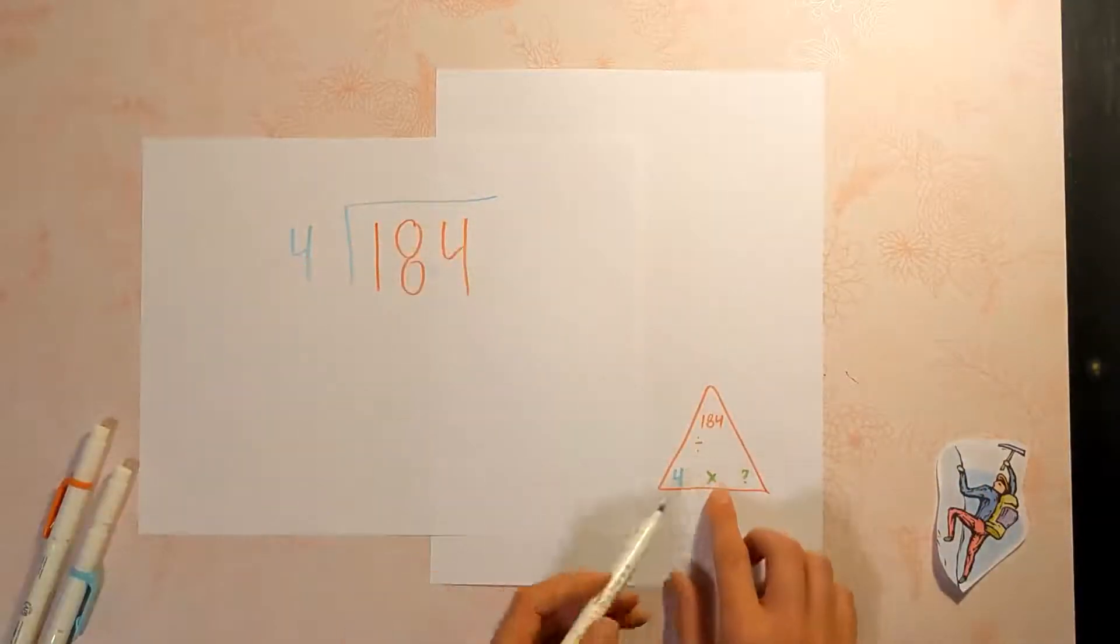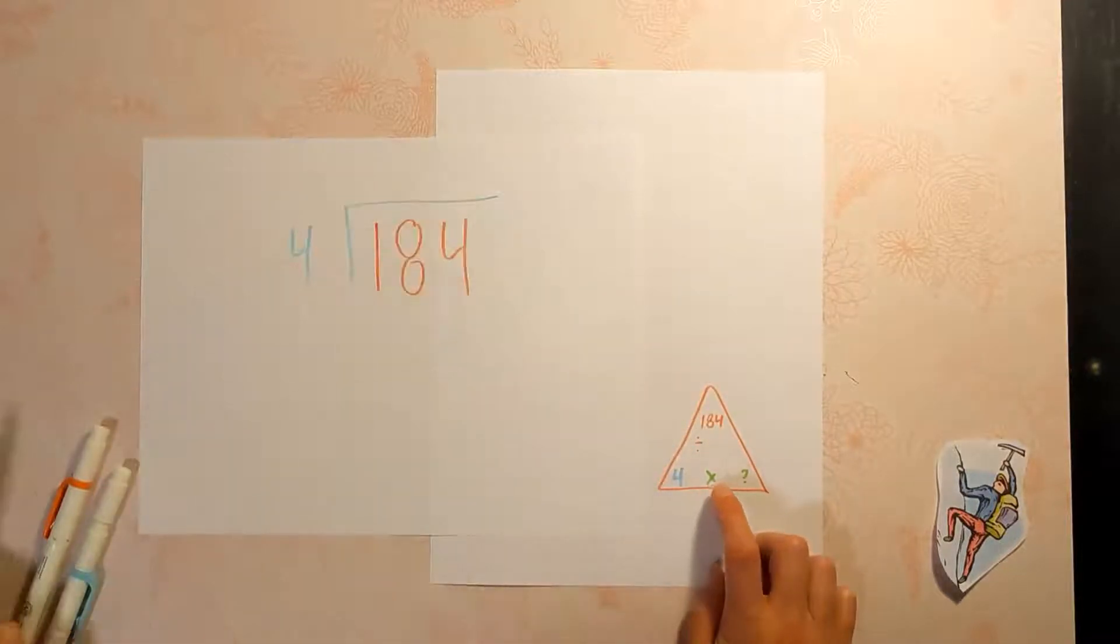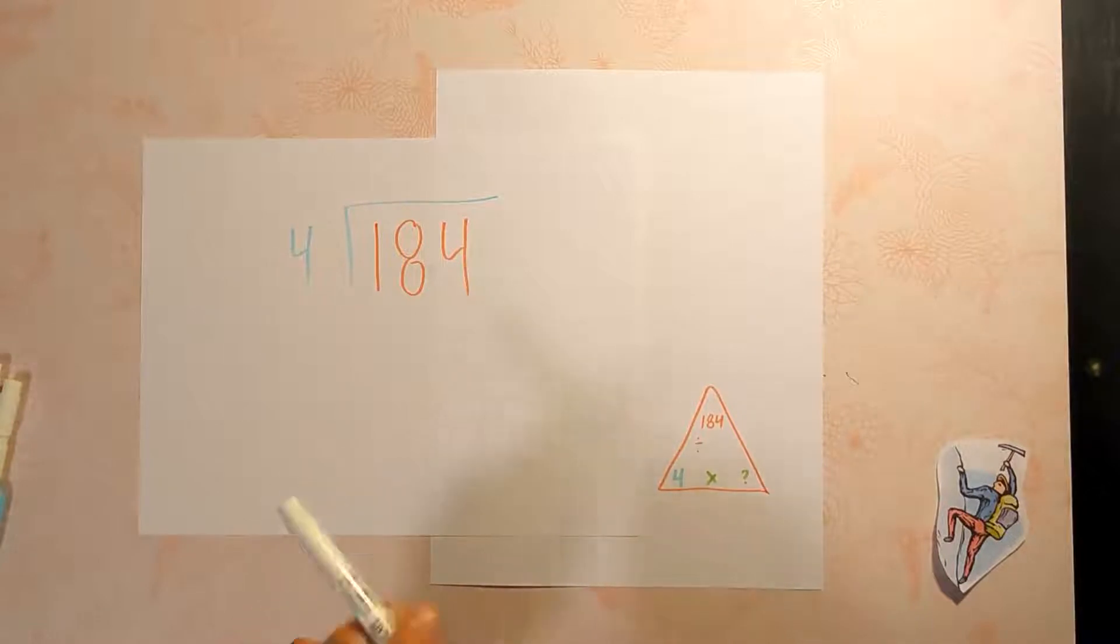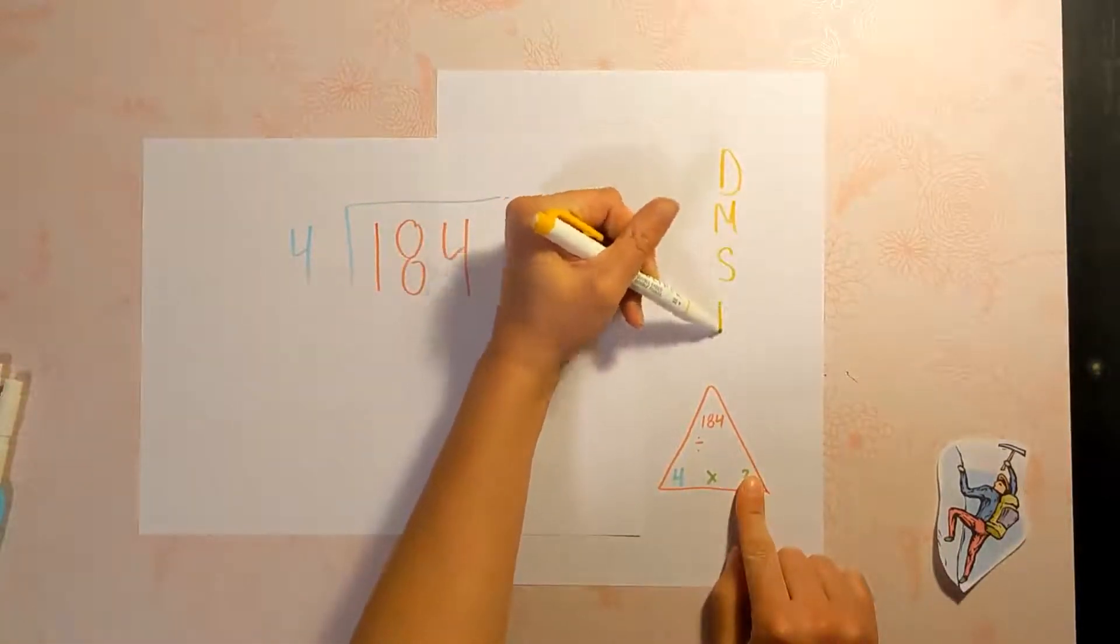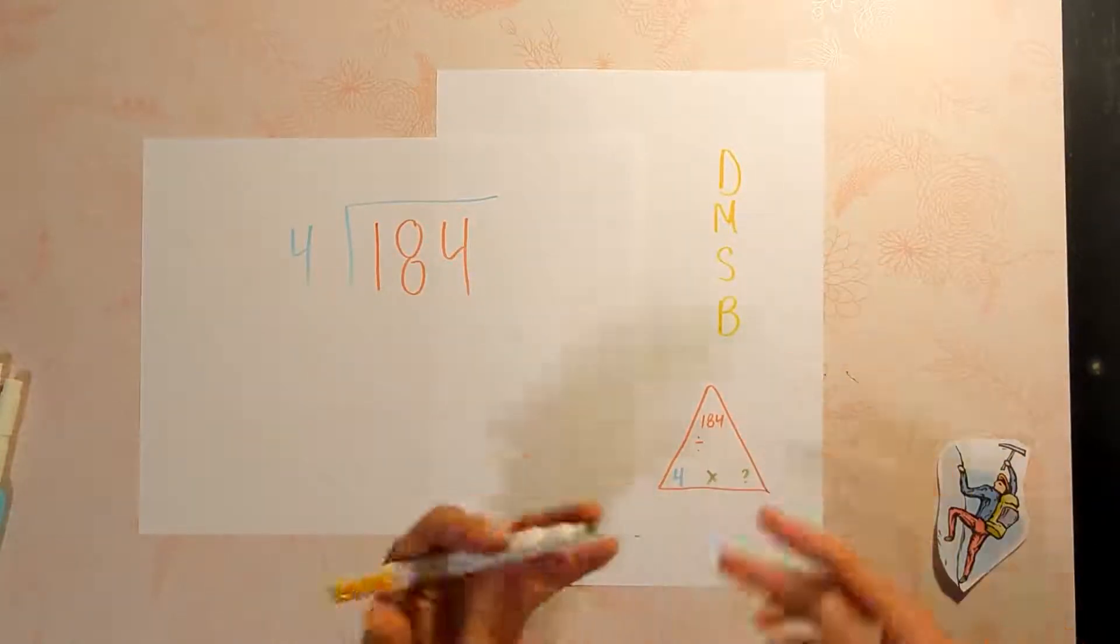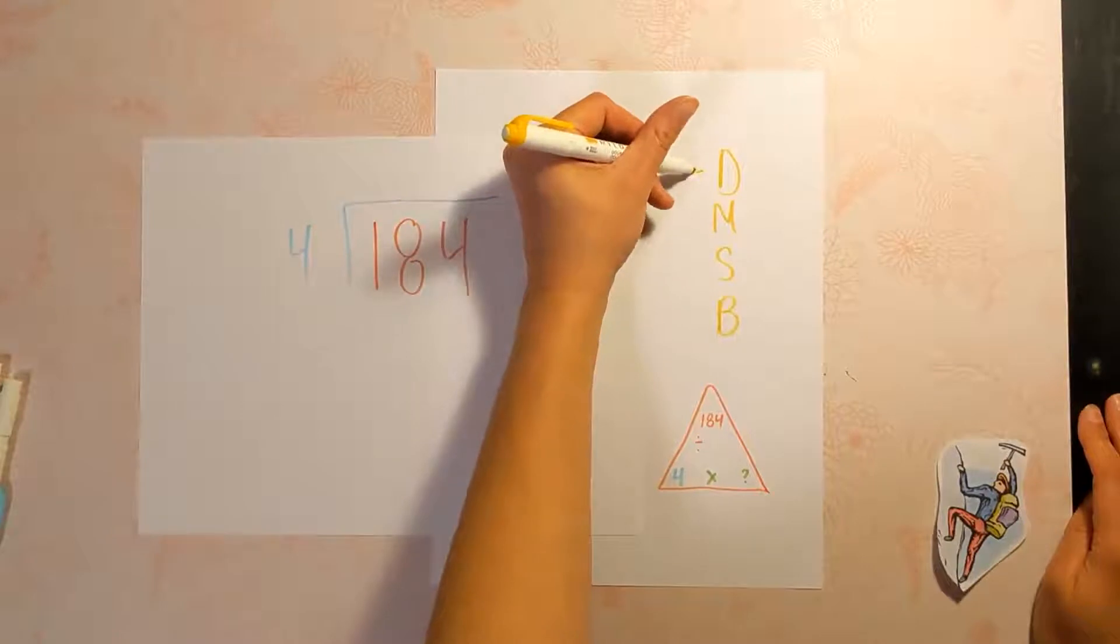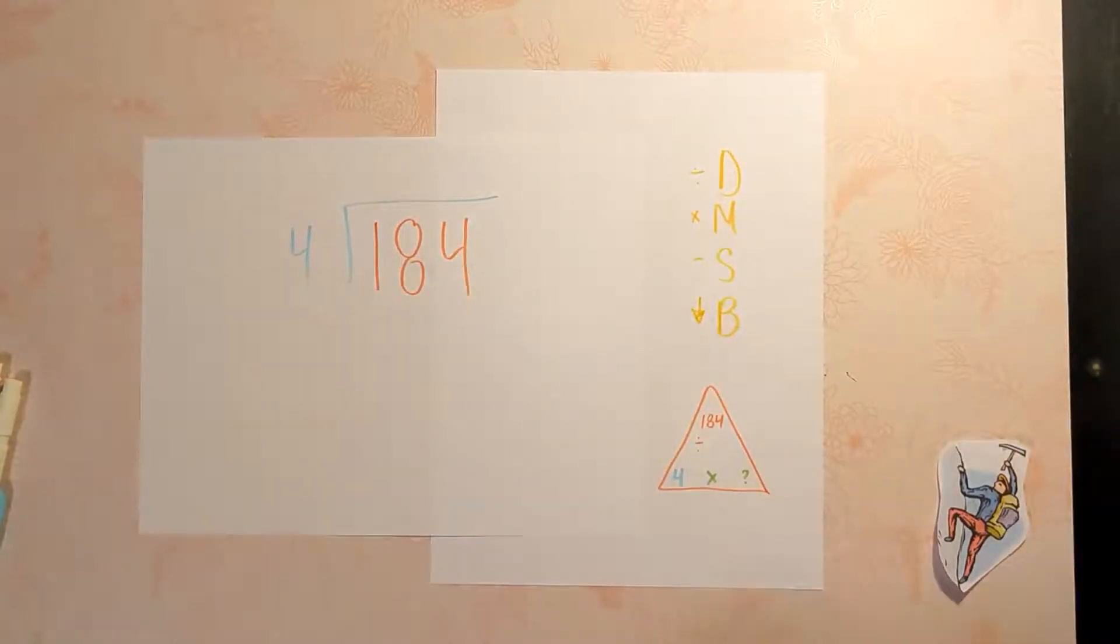So we're dividing, but we're also using multiplication because we're trying to say 4 times what will get us up to 184. When we look at our steps, does McDonald's serve burgers? We're going to be multiplying because division and multiplication work together. So we're going to divide, multiply, subtract, bring down. Those are the steps we'll follow.